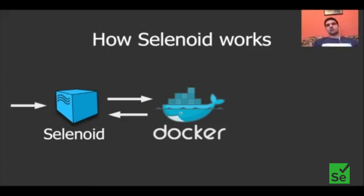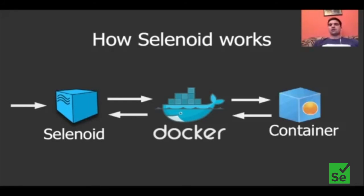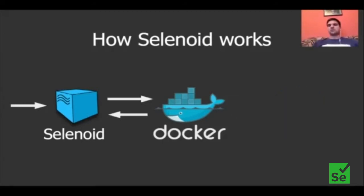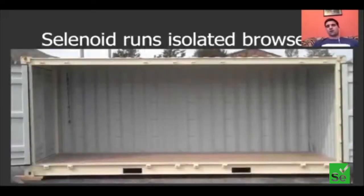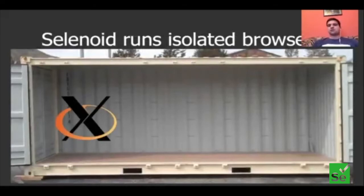Selenoid runs browsers in isolated containers. Every such container has inside everything needed to open pages in a browser, including a VNC server — an application allowing to start graphical applications like a browser — compatible versions of the WebDriver and the browser, and other stuff like fonts, Flash player, encodings, and so on. Everything needed to correctly render the pages in the browser.